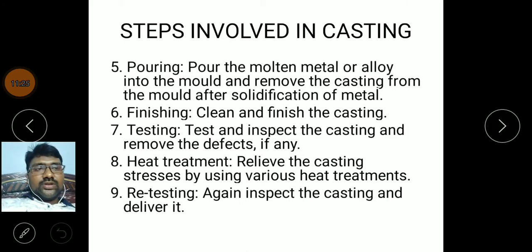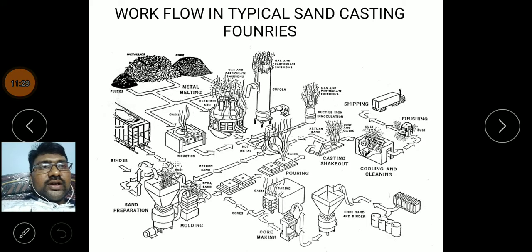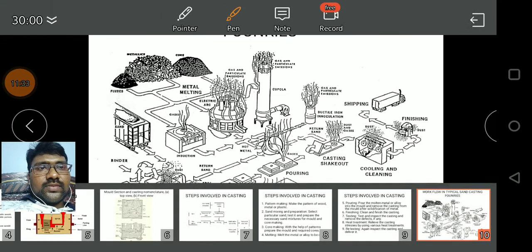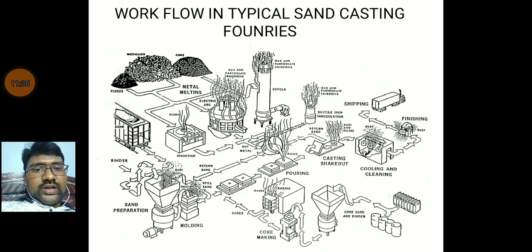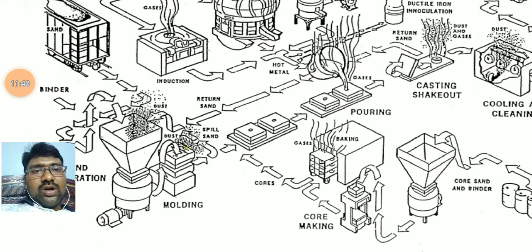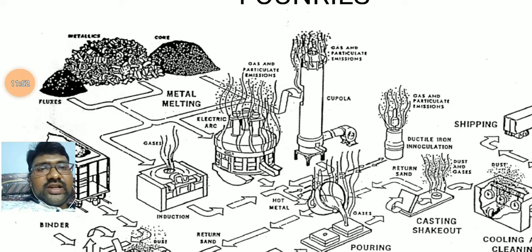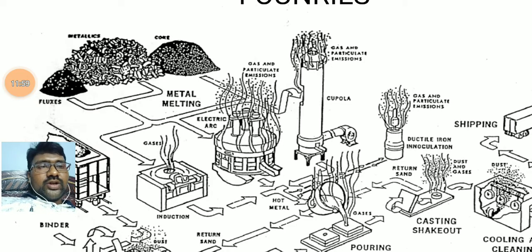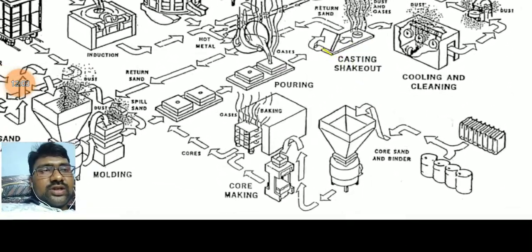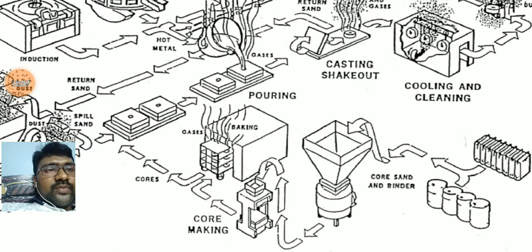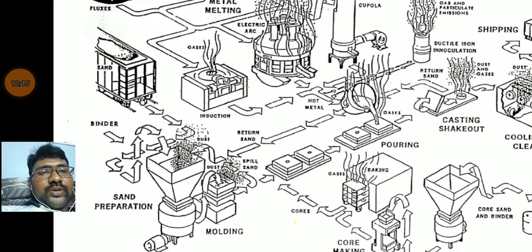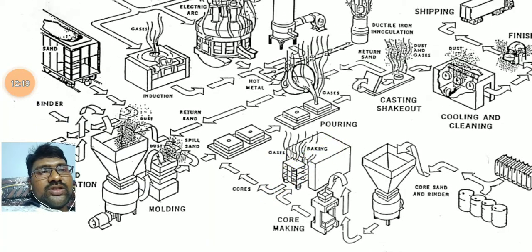Step nine: retesting — again inspect the casting and check for strength and stresses before delivery. These are the workflow diagram of the casting process. First we prepare the mold by machine molding or hand molding. The raw material is converted into molten metal by different processes: induction, electric arc, and cupola. Core preparation uses core sand and binders with different machines. From mold making and core preparation we combine to form the final molding.